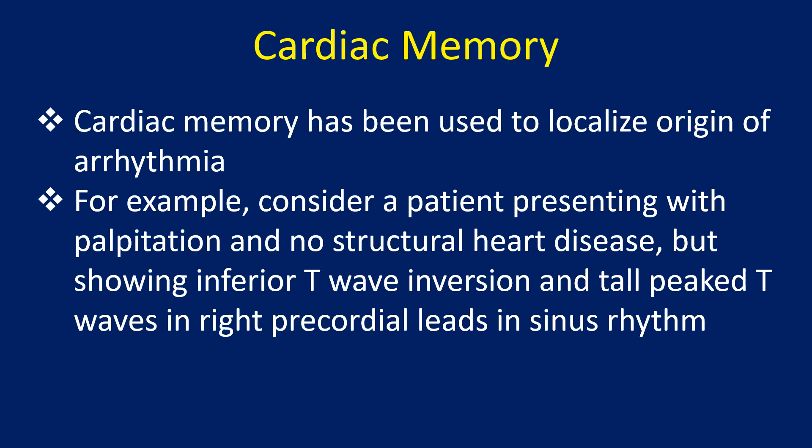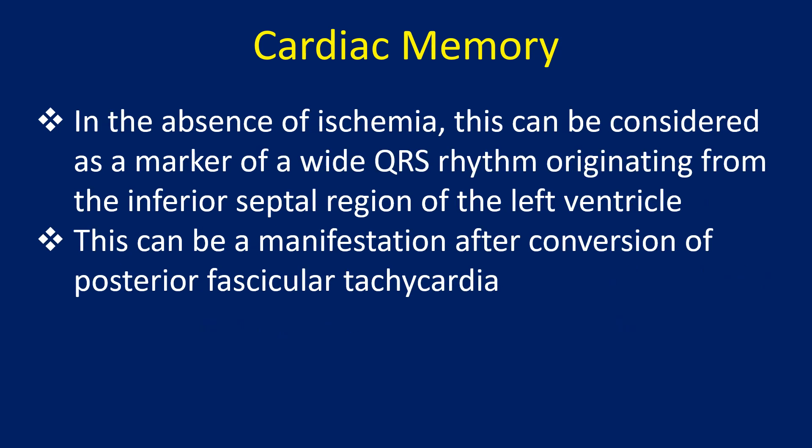Cardiac memory has been used to localize the origin of arrhythmia. For example, consider a patient presenting with palpitation and no structural heart disease, but showing inferior T wave inversion and tall positive T waves in right precordial leads in sinus rhythm. In the absence of ischemia, this can be considered as a marker of a wide QRS rhythm originating from the inferior septal region of the left ventricle. This can be a manifestation after conversion of posterior fascicular tachycardia.